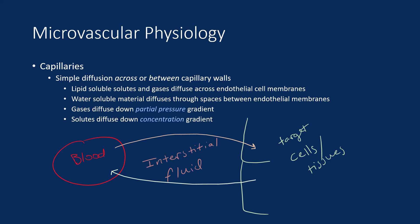Here we have a capillary carrying blood, the interstitium, and the target cells and tissues. Simple diffusion occurs across the walls of the capillary, but the sophisticated mechanisms of transport — including channels and transporters — are primarily located on the target cells in the tissues themselves, which the material interacts with after traversing the capillary wall and the interstitial fluid.